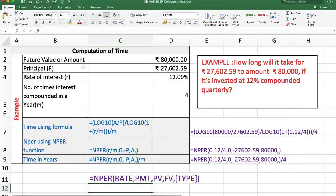In this example, amount is ₹80,000, principal is ₹27,602.59, rate of interest is 12%, and M is 4 because interest is compounded quarterly. We can calculate time using a formula or using the NPER function.